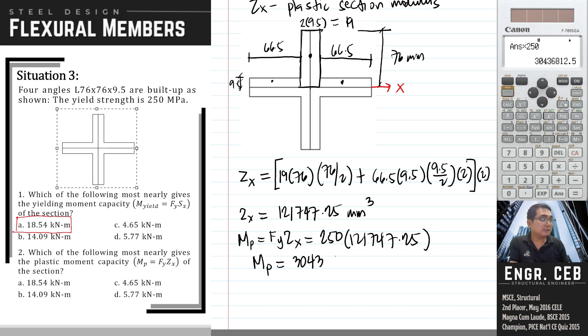That gives us 30,436,812.5 newton-millimeter. We divide this by 1,000 squared to obtain the answer in kilonewton-meter. Therefore, this is 30.44 kilonewton-meter, and that is letter D.